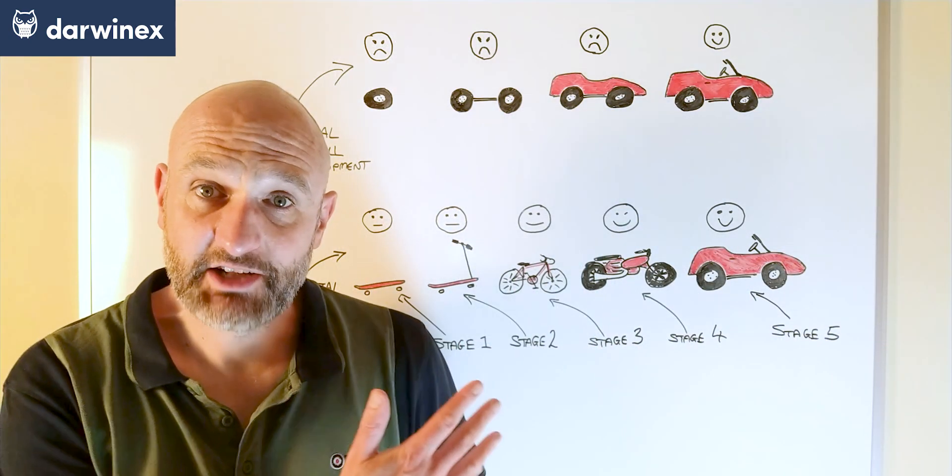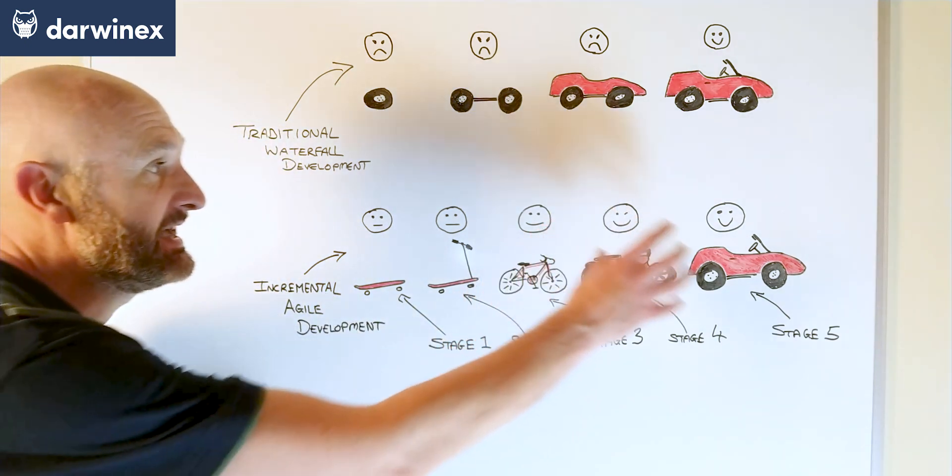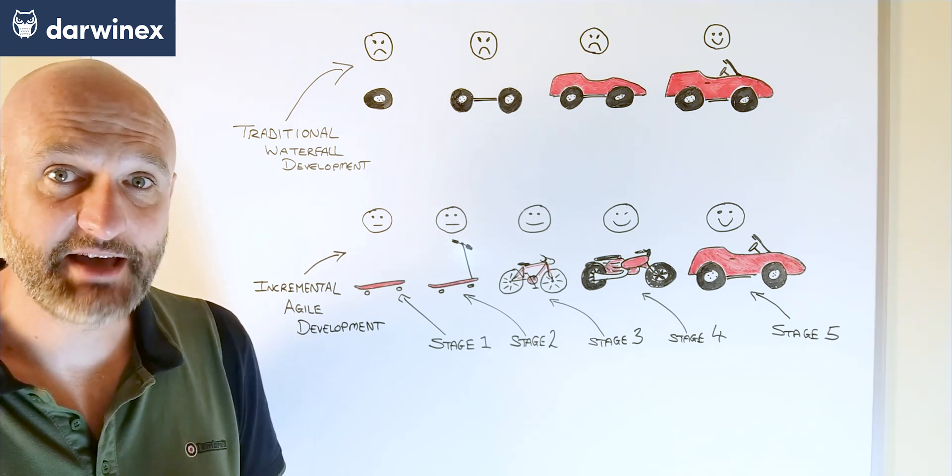When comparing the agile methodology with a traditional approach you'll notice that they both have the same end goal, the same product, but the process to get there is different.